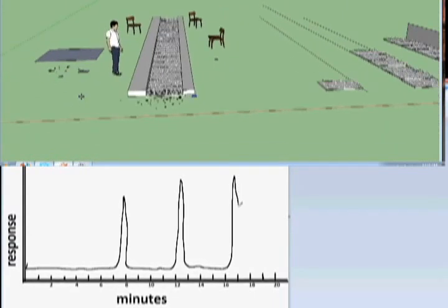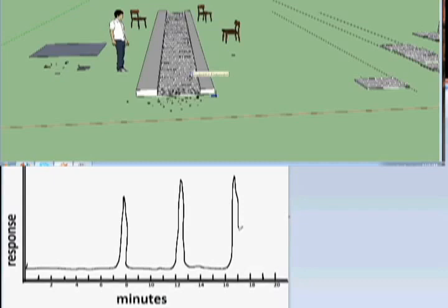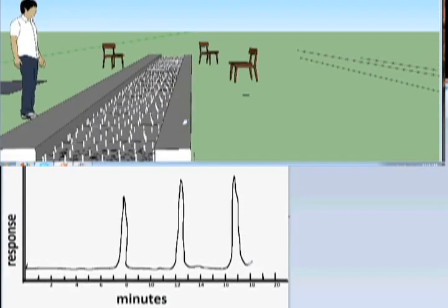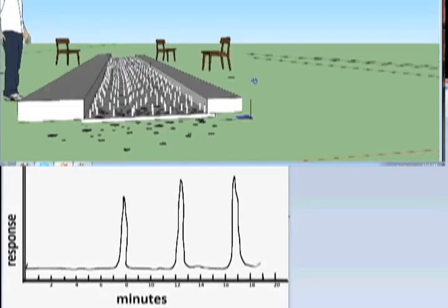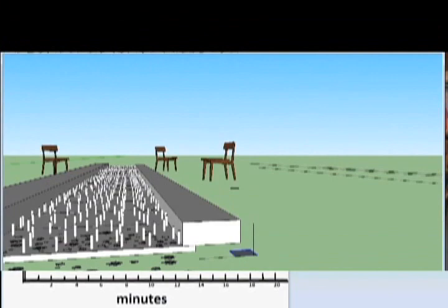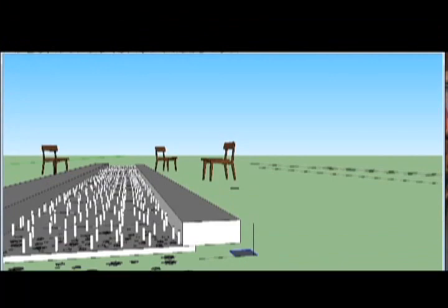The idea of chromatography is an interaction between a mobile phase, which in this case is water, and a stationary phase, which in this case is the pegs. This is what chromatography is all about, and please remember that this is a model.